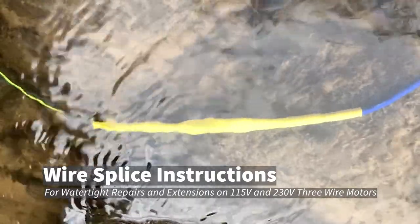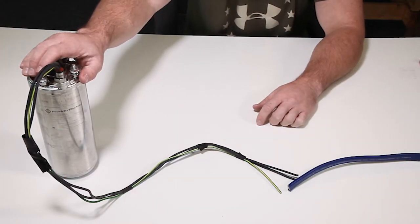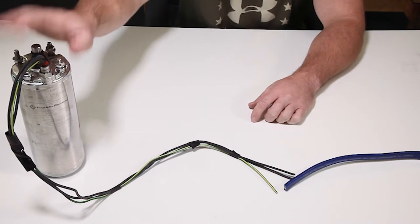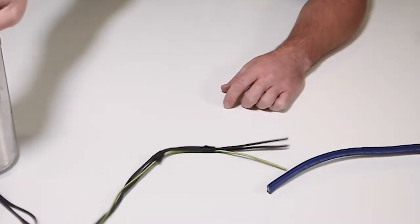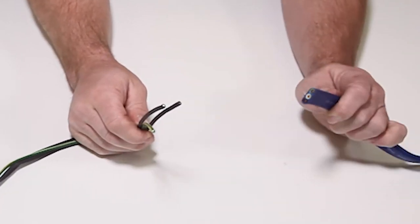When done properly, Scott Aerator 3-wire motor splice kits provide a watertight connection for repairing or extending your power cord. In this video, we will demonstrate step-by-step instructions on how to achieve a safe and secure splice.